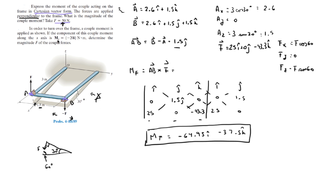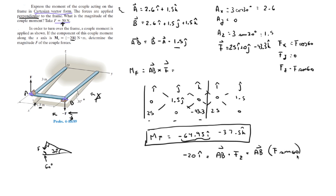For the second problem: a couple moment is applied to turn the frame. If the component along the x-axis is Mx = −20i, determine the magnitude F of the couple forces. Since the i component equals −20, we need AB cross the Z component of the force. AB times F sine of 60 gives −1.5 times F sine of 60 equals −20, which gives F equal to 15.39 newtons.